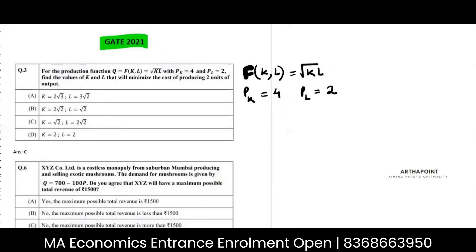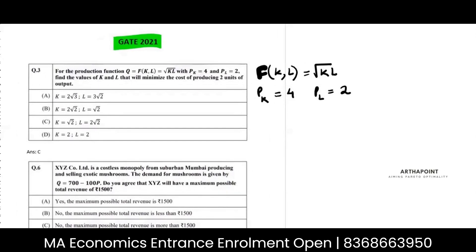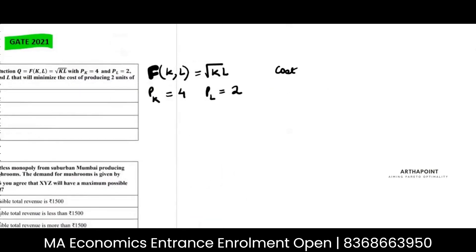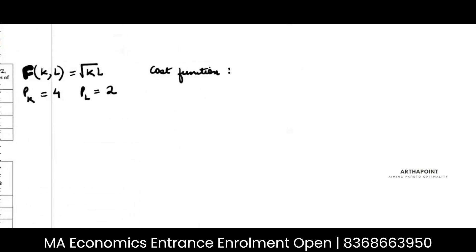So the aim is to minimize the cost. Let's start by writing a cost function. Cost function is written by WL plus RK. W is the wage rate. The wage rate can also be defined as the cost of labor. So you should remember this that W represents the wage rate, and the wage rate is nothing but it is the price of labor.